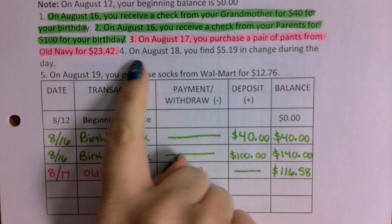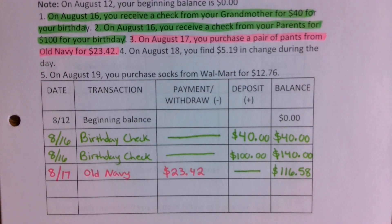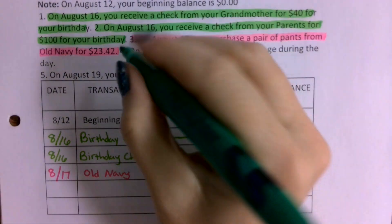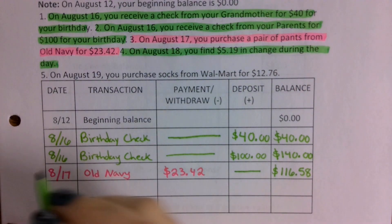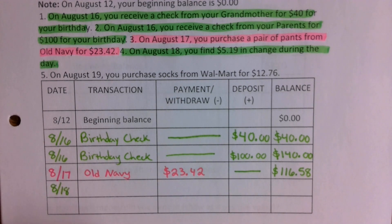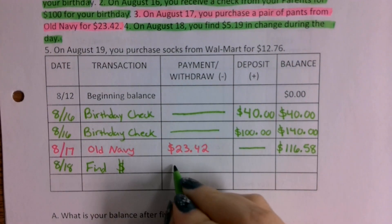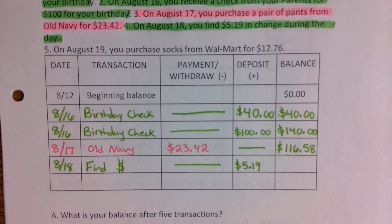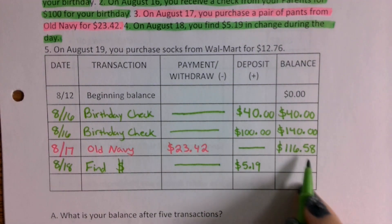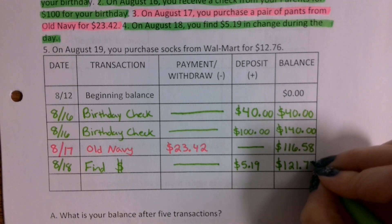One more transaction: on August 18th you find $5.19 in change during the day. Is that a withdrawal or a deposit? A deposit — you found money, that's a positive thing. I'll put 8/18, write 'found money' for the transaction, and record $5.19 as a deposit. Adding $5.19 to $116.58, my bank account is now at $121.77.